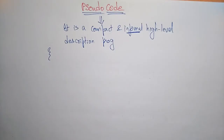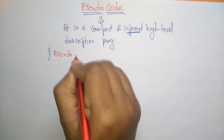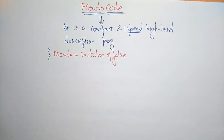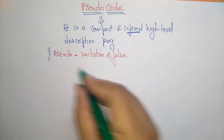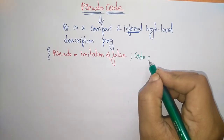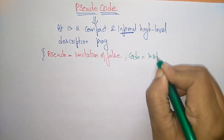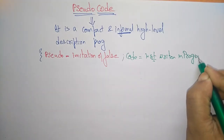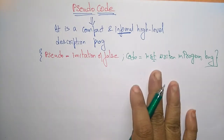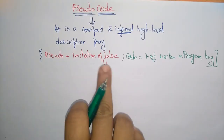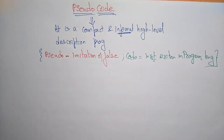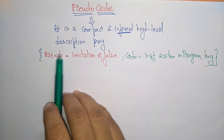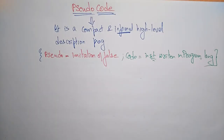Here the name: pseudo means imitation or a false state — it is just an imitation or false. Whereas code refers to the instructions written in a programming language. So the word pseudo means it is just imitation or false instructions written in a programming language. Pseudocode will be useful only for the description of a program — an informal high level description of a program.